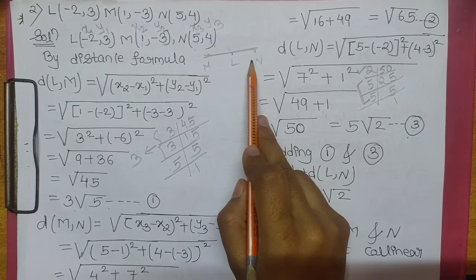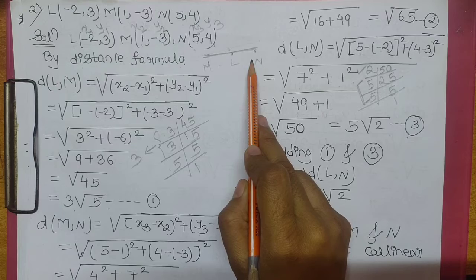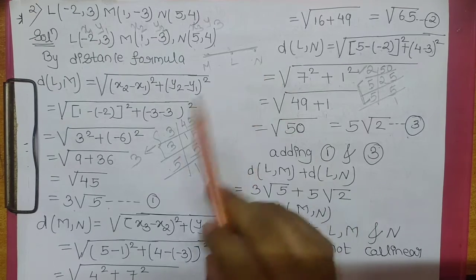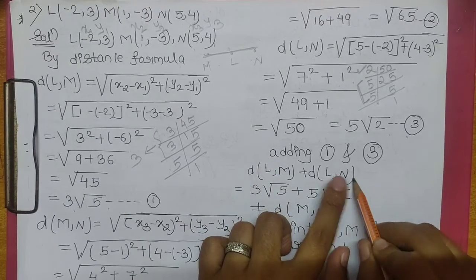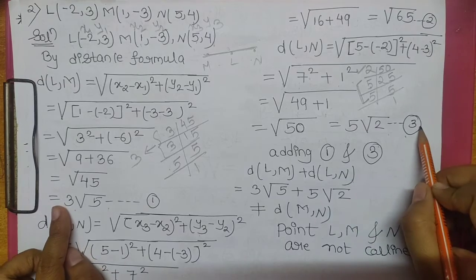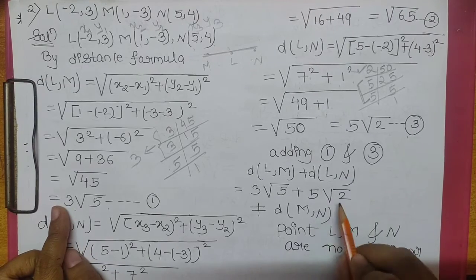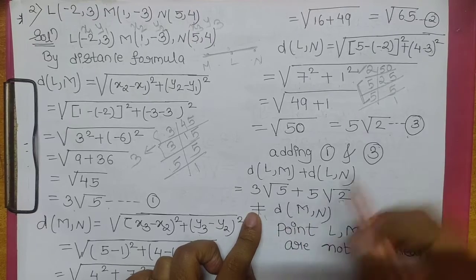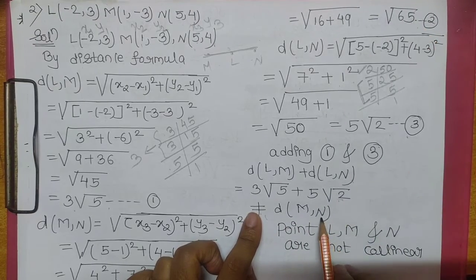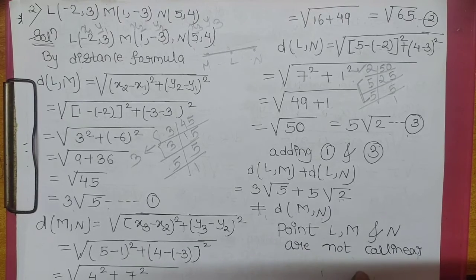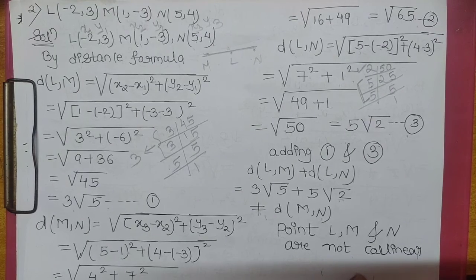LM aur LN ke distances ko add karenge. Agar MN aaya toh collinear hai, otherwise nahi hai. LM aapka hai 3 root 5, LN aapka hai 5 root 2 — jiska addition kabhi bhi square root of 65 nahi aayega. Is liye point L, M, N collinear nahi hai. Therefore, points L, M, N are not collinear.